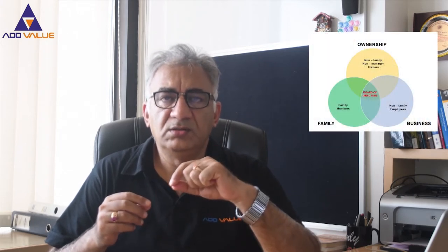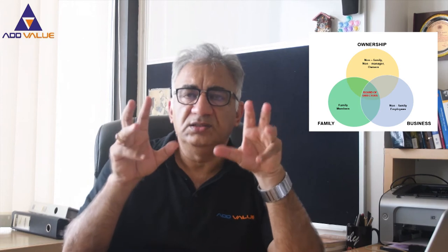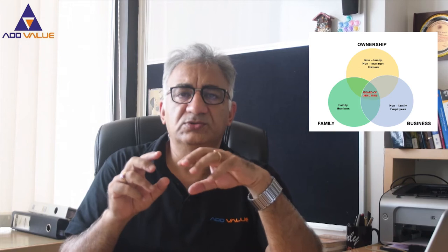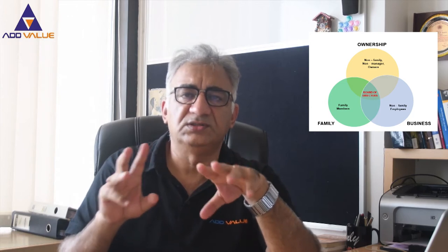This three-circle model was published by Davis in his doctoral thesis in the year 1982. The three-circle model has three overlapping circles of the family members, employees, and the owners. This elegant and versatile model helps us to understand the current position and perspectives of each and every key stakeholder in the family firm. We are able to analyze the family business by placing the protagonist and other key players in one of the seven regions of the three-circle model.